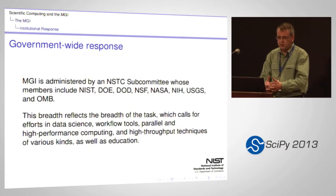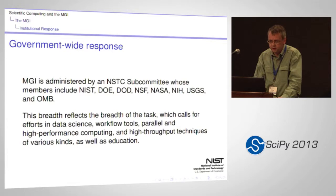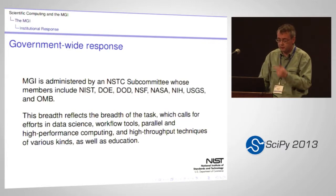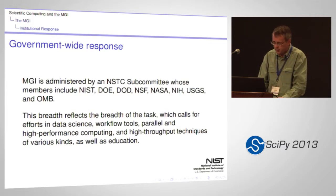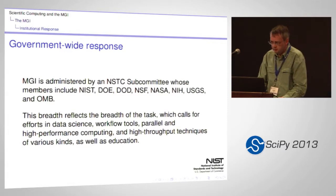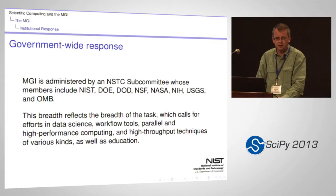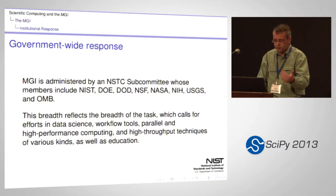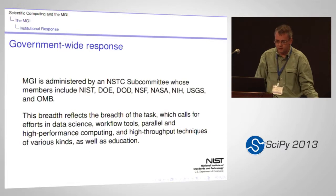The government is responding to the initiative in the way that the government does — there are lots of committees. There's a National Science and Technology Council subcommittee with input from the various originating institutions as well as NASA, the National Institutes of Health, U.S. Geological Survey, and the Office of Management and Budget. This might be the most boring slide I've ever presented, but it's important because it captures the breadth of the task and the breadth of the response. The government is stepping up across many agencies — with efforts in data science, workflow tools, parallel computing, high performance computing, high-throughput techniques of various kinds, and education.